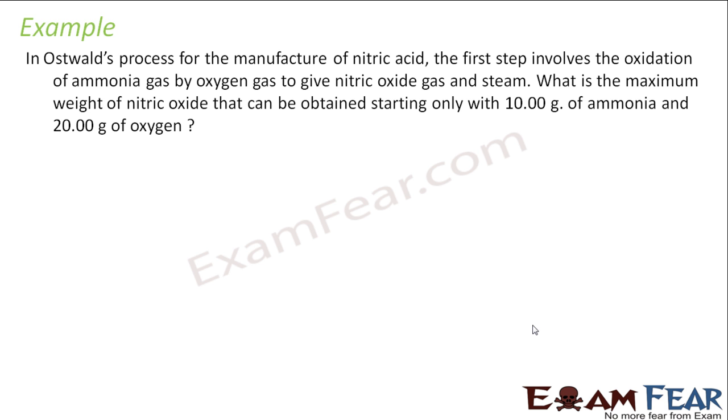So this is more of a stoichiometry question. This question says in Ostwald's process of manufacturing of nitric acid, the first step involves oxidation of ammonia gas by oxygen. That is, you have NH3, you add oxygen to it, it will oxidize to form NO and steam. What is the maximum weight of nitric acid obtained? So the first thing you can do is you can balance this reaction with the method which I have just explained.